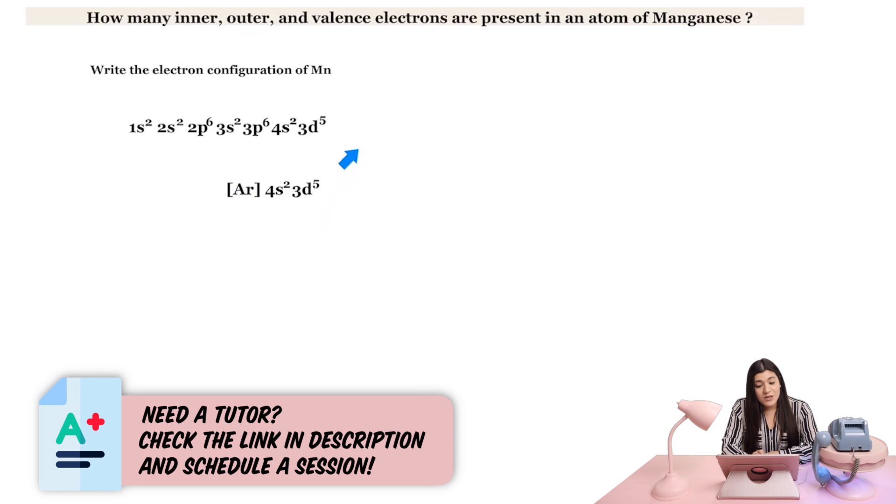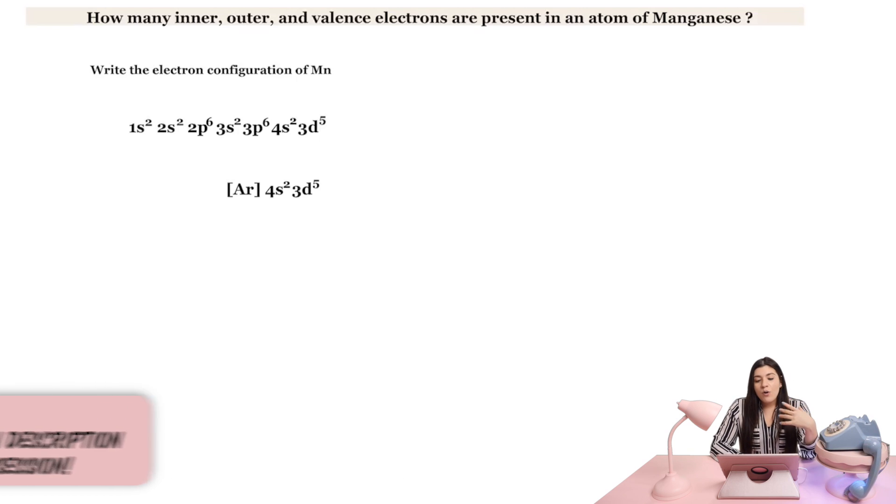So we said we found our overall expanded electron configuration and the abbreviated. And yes, I do recommend writing both out for this type of question. The next thing we're going to see, the reason why I love doing the electron configuration in the beginning and the abbreviated is because it makes it so much easier to figure out how many inner electrons, outer electrons and valence electrons just by looking at the electron configuration.